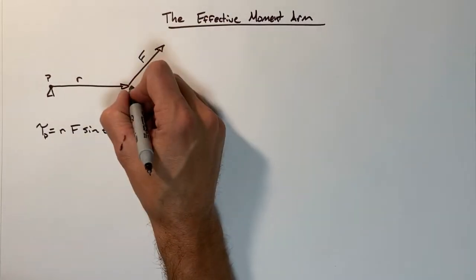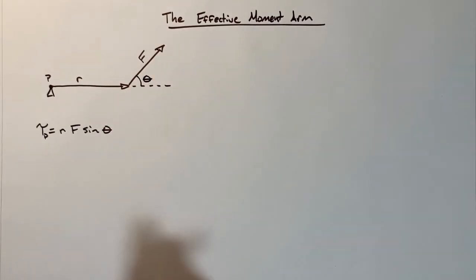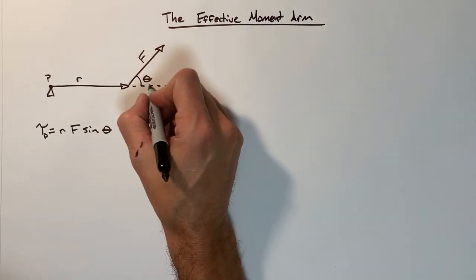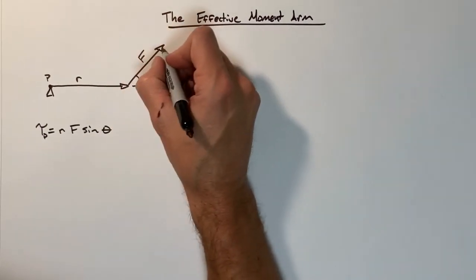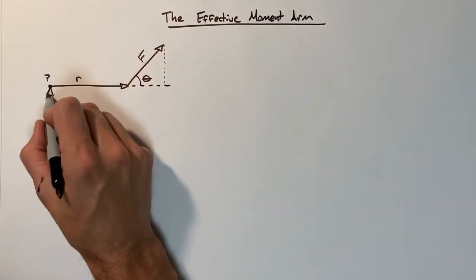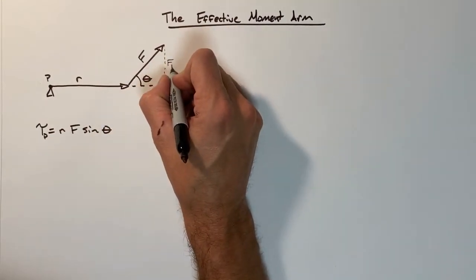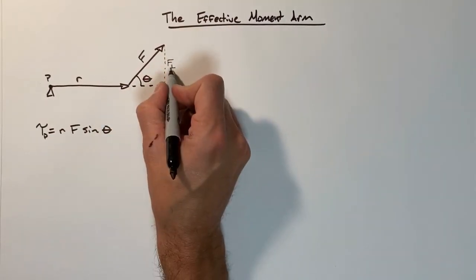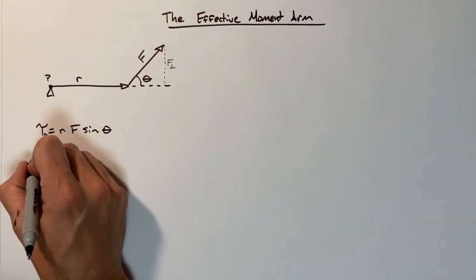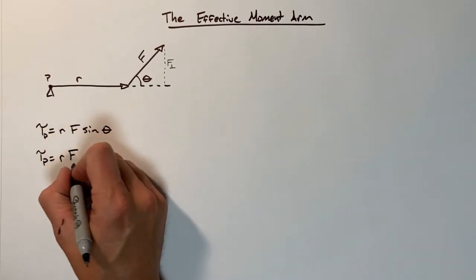That is this angle right here. What winds up happening is people are constantly taking the sine of this angle, and so they start to realize that actually what we're doing is we're multiplying the radius vector by the component of force which is perpendicular to that radius vector. That's absolutely true.